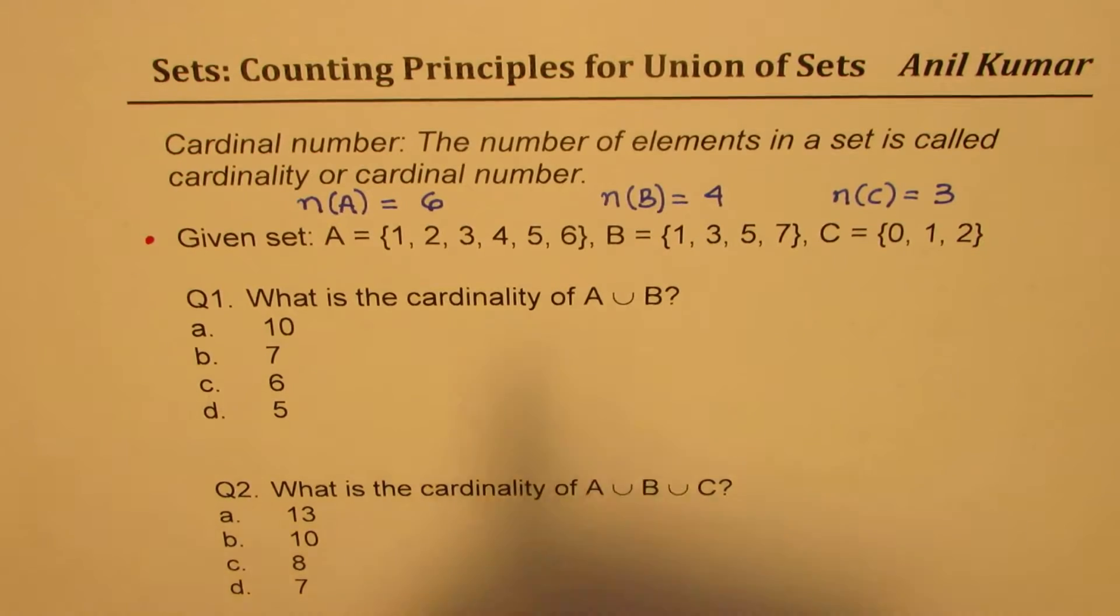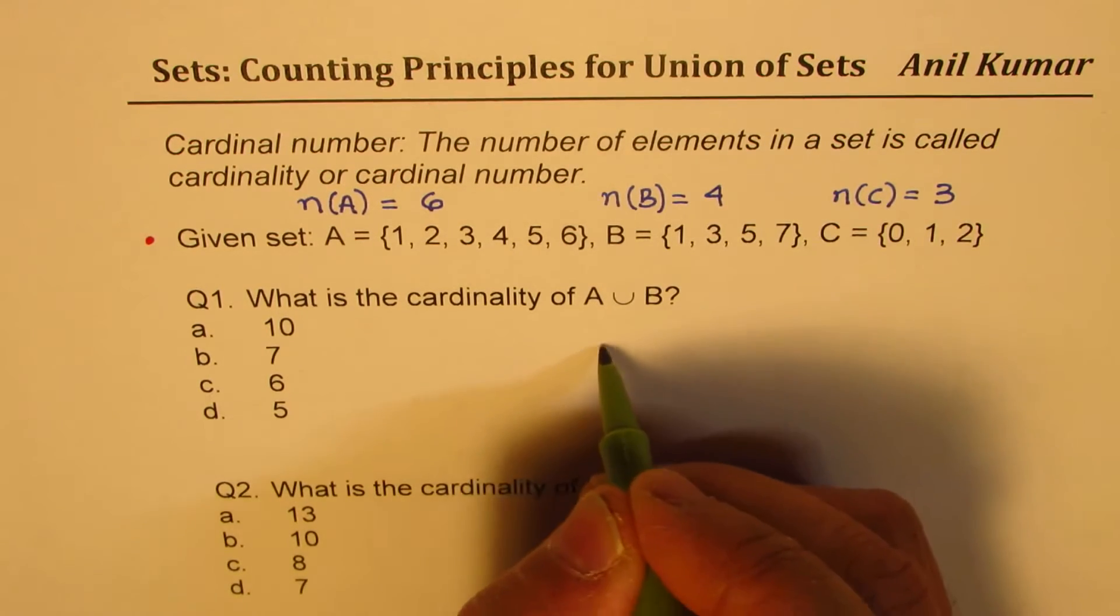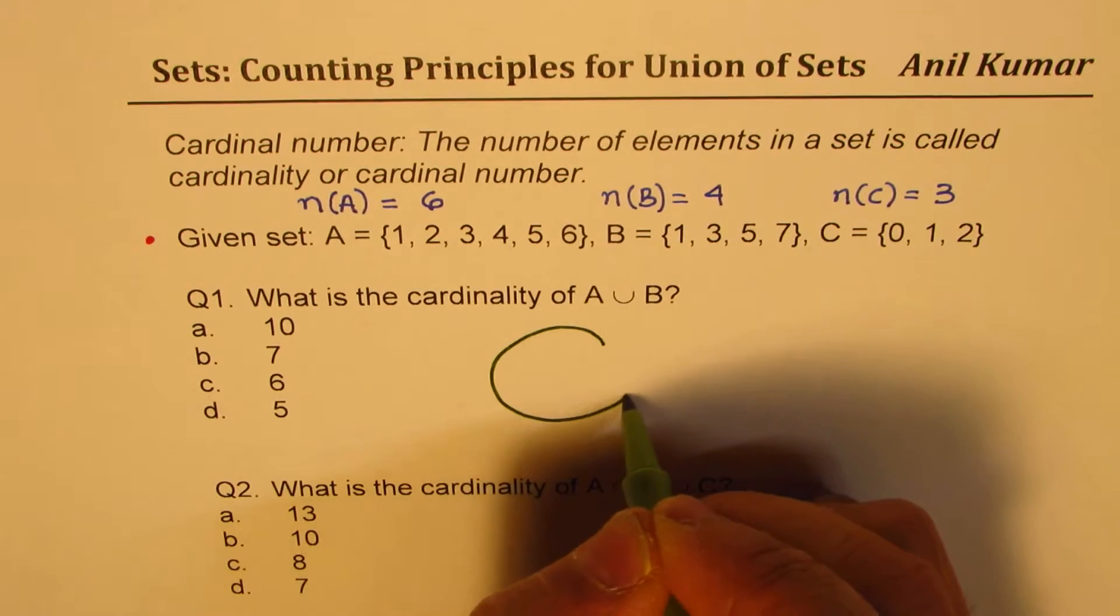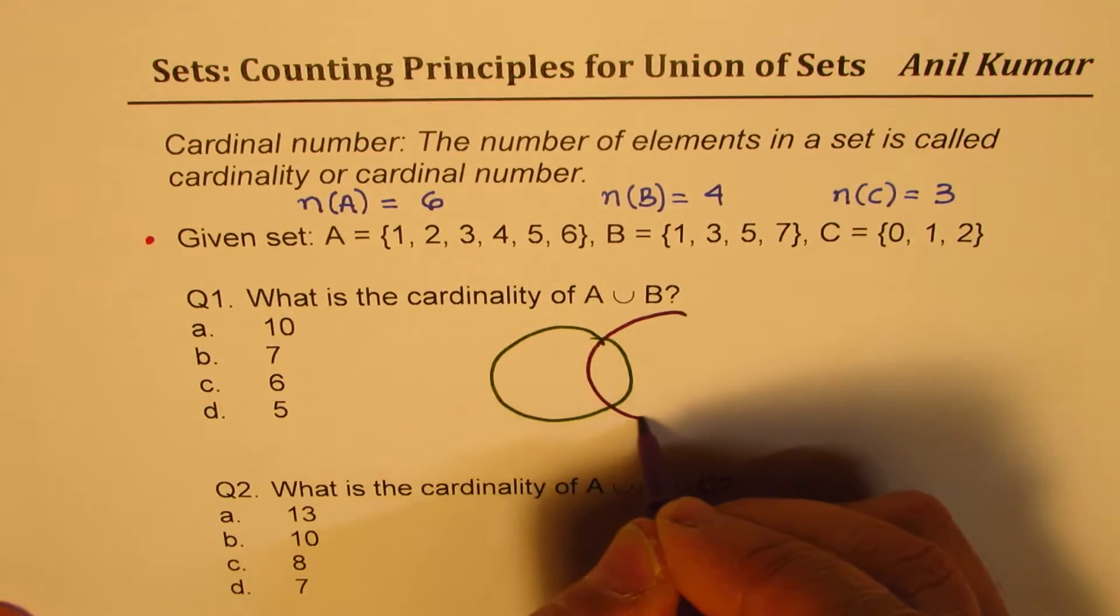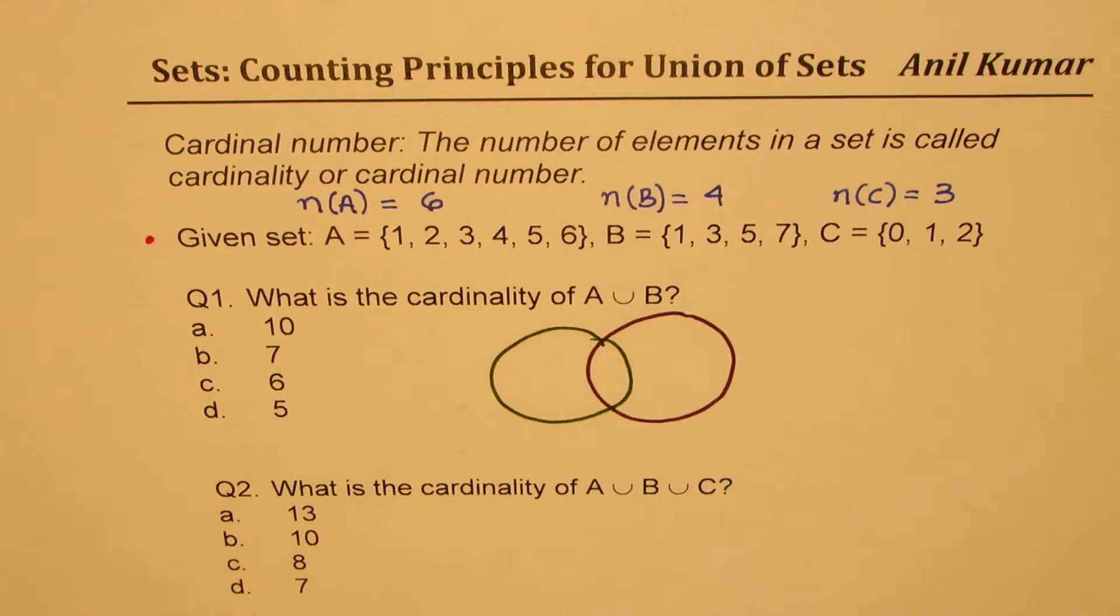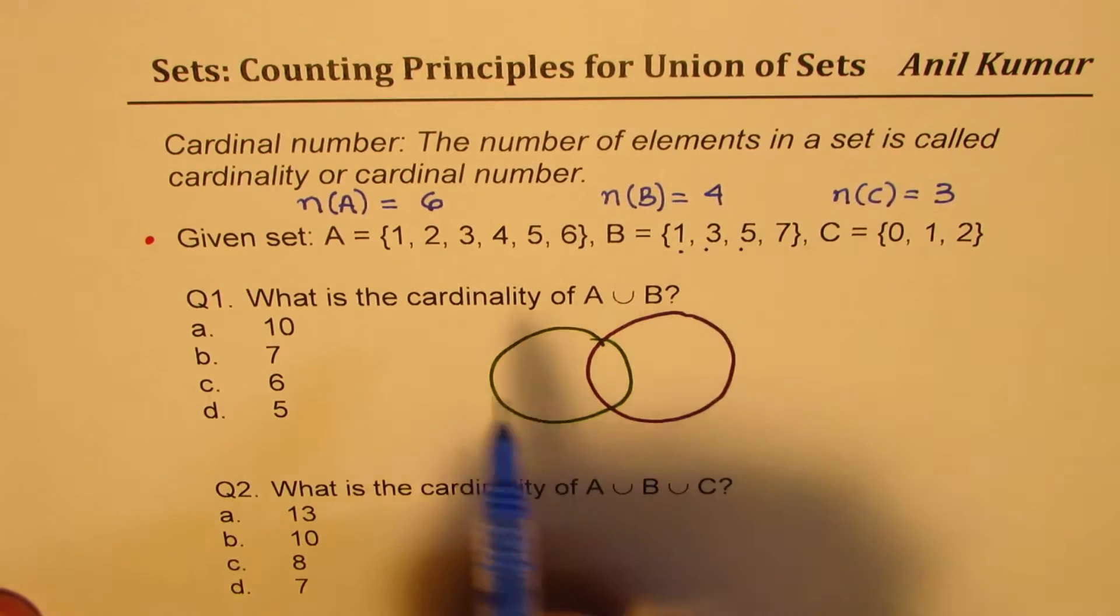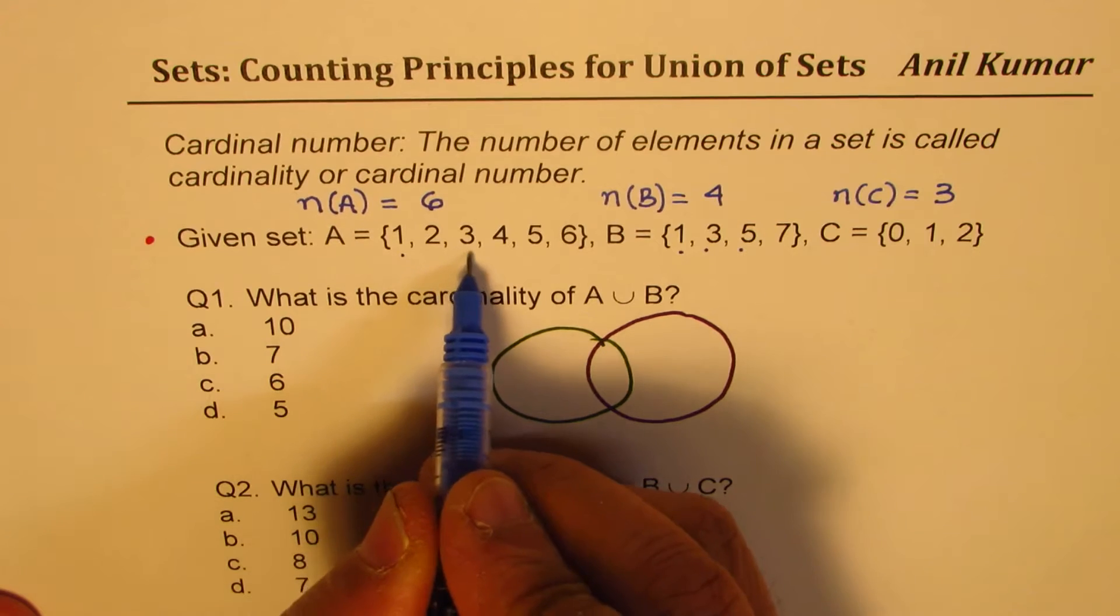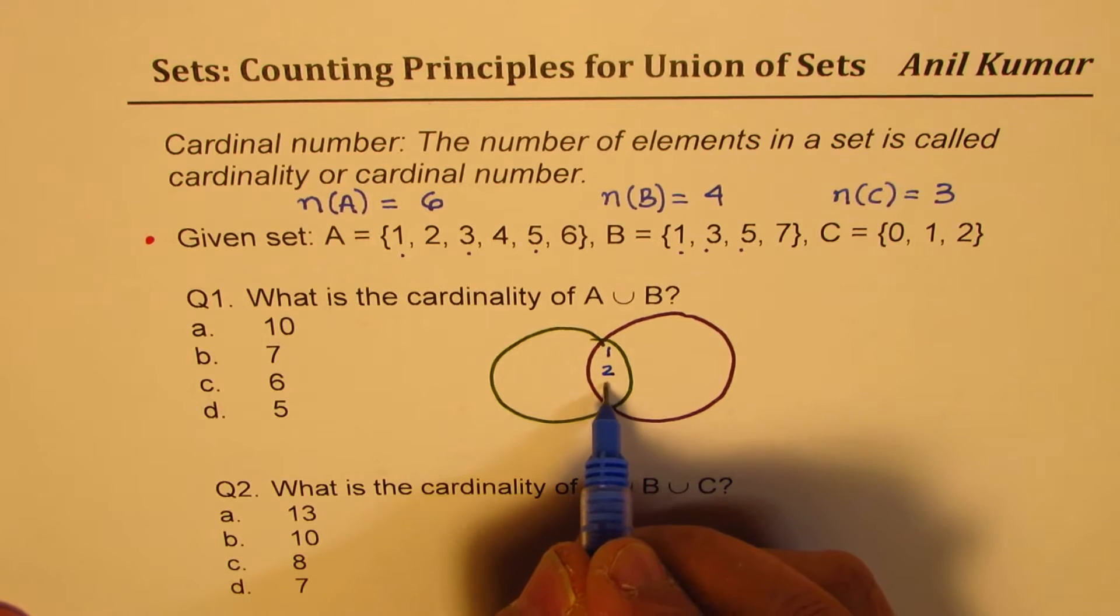Now, let me illustrate what is A union B. So, we'll just make a Venn diagram representing A union B. Let's say this is A for us, and we have B. If you look at the elements, 1, 3, and 5 are common to both A and B. So, they will be common, so we could write these numbers in their intersection.